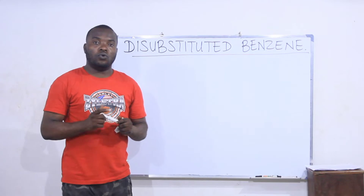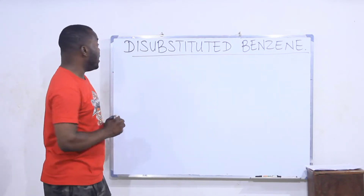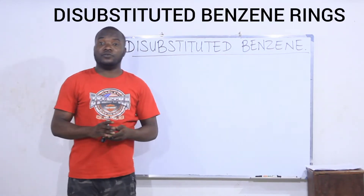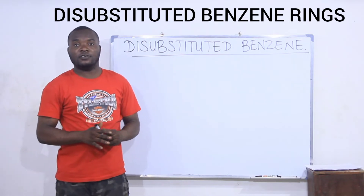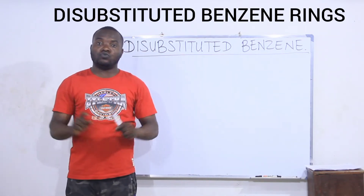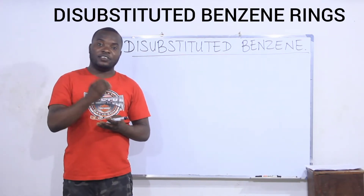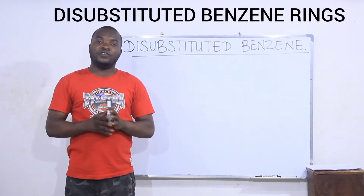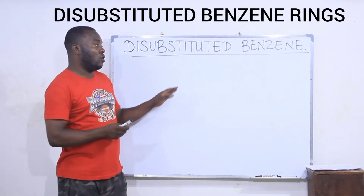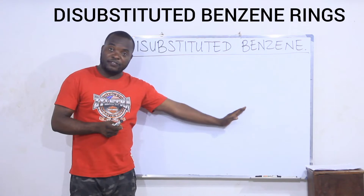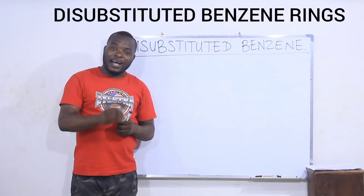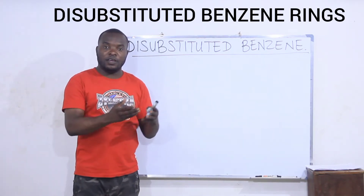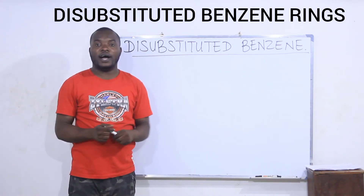In this video we are going to learn how to name the disubstituted benzene rings. A disubstituted benzene ring is a benzene in which two of the hydrogen atoms on the benzene ring are substituted with a group of atoms or an atom.